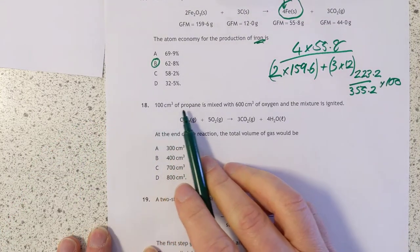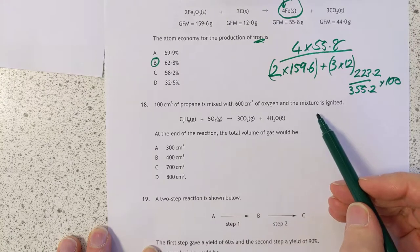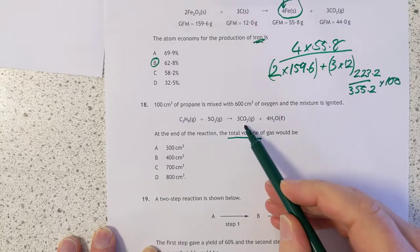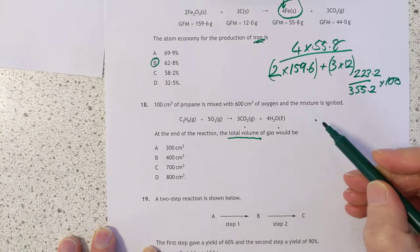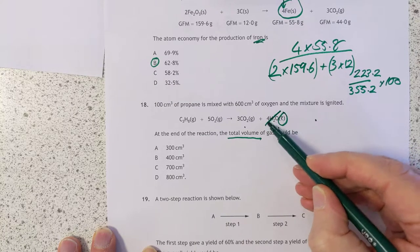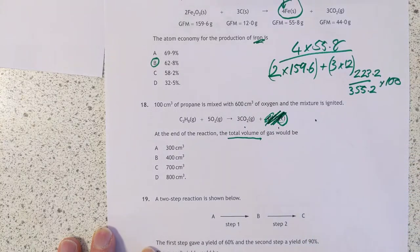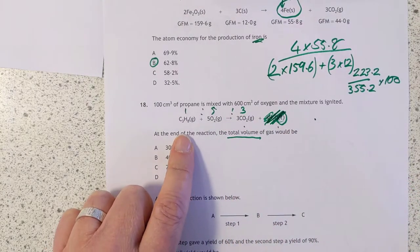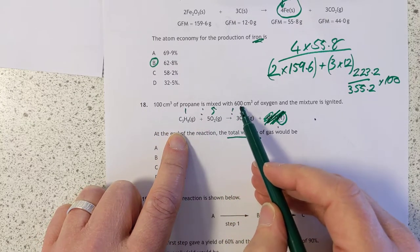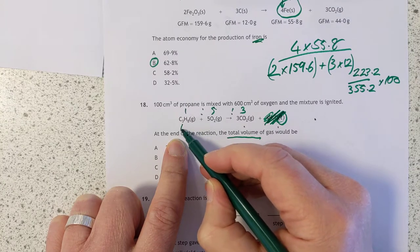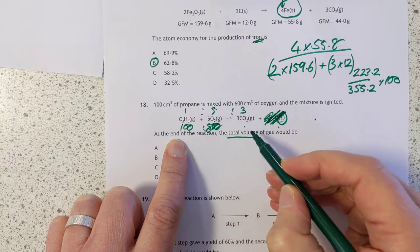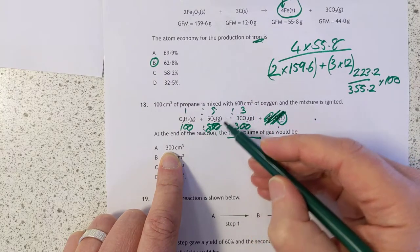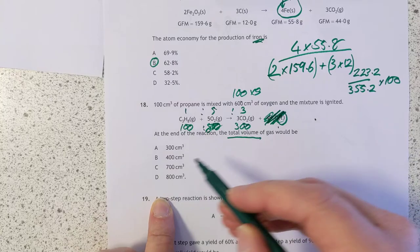Question 18: 100 centimeters cubed of propane is mixed with 600 centimeters cubed of oxygen. The mixture is ignited. At the end of the reaction, the total volume of gas would be... They have specified that it's liquid water, so we can ignore the volume of liquid water. It is negligible. The ratio here is one to five to three. We can burn 100 of this, which will react with 500 of this. And you'll make 300 of this. Tempted to say 300, but of course we had 600 and we've only burned 500. So there's 100 excess of this. So the total final volume is 400.